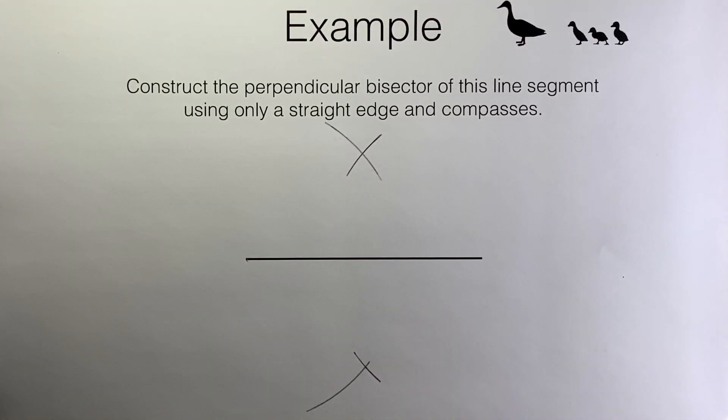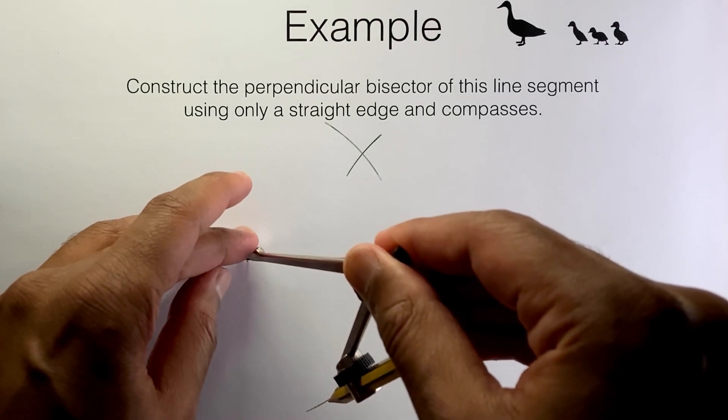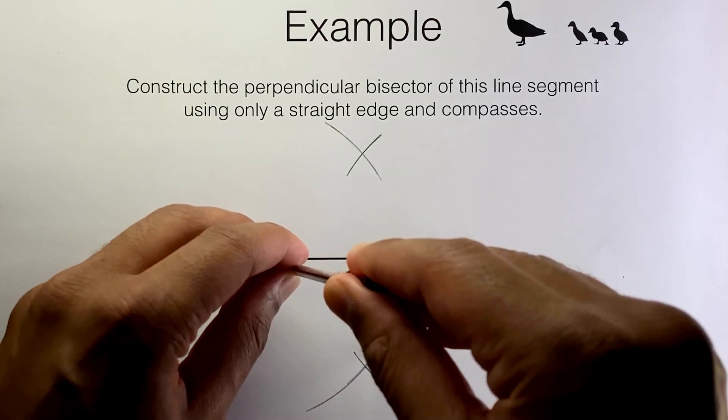Now the point of doing that was to get these two crosses there and there. If my original arc wasn't drawn quite in the right place I could go back and extend it so that the cross becomes evident like that.